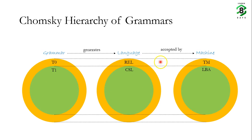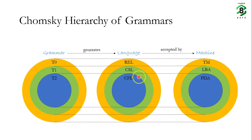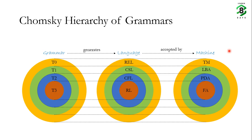The type 1 grammar produces the context sensitive language and it is accepted by a machine called linear bounded automata. The type 2 grammar produces a language called the context free language, which is accepted by a machine called the pushdown automata. Finally, the type 3 grammar produces a language called a regular language, which is accepted by a machine called a finite automata. This is basically the Chomsky hierarchy of grammars.